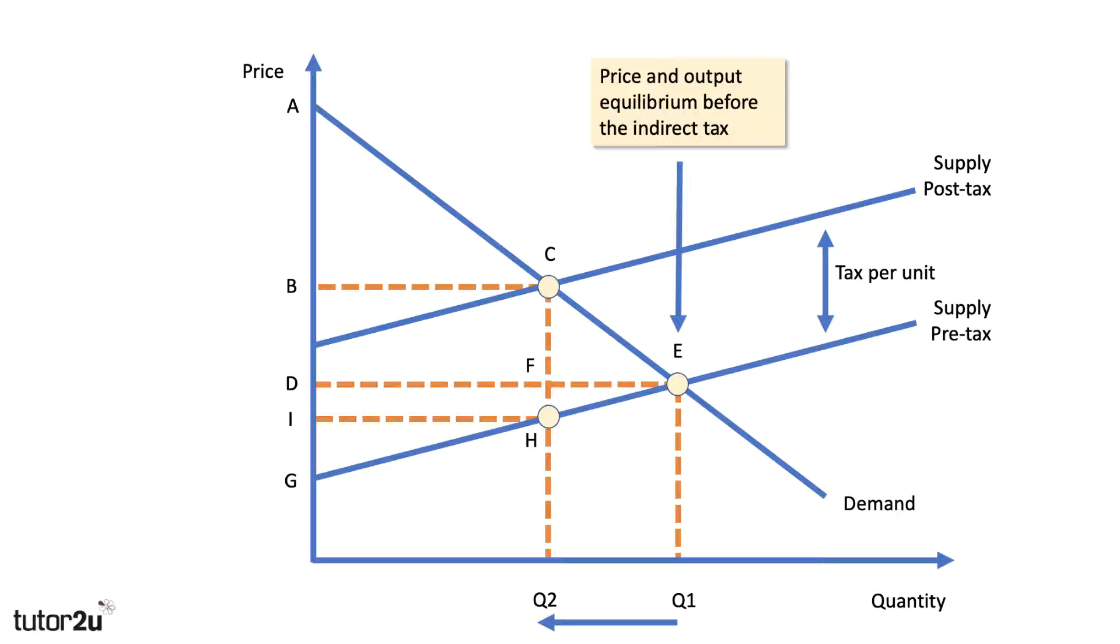So this is the initial market, and this is the price and output before the indirect tax is imposed. So initially, the market is in equilibrium at point E, output Q1, and price D. So let's take a step back here. That's the market before the tax, the price was D at equilibrium E and output Q1. And that's basically the free market price and output. And then we impose the tax on the market.